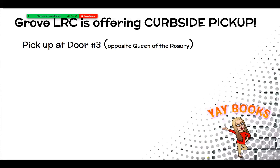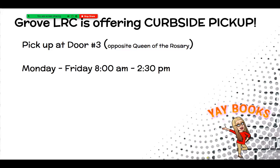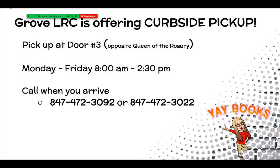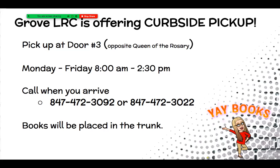When a student puts a book on hold and it becomes available, the student receives an email letting them know. At that time, you or another responsible driver from home would come to Grove Junior High to door number three, which is the door kitty corner from Queen of the Rosary Church, anytime Monday through Friday between 8 and 2:30. You would call when you arrive — students have been given that number, and I've also posted it here. There are two different lines, so if you don't get an answer, always try the other one. The books will be delivered outside to you without you having to get out of your car, either in the trunk or the backseat, and students can keep those books for up to four weeks. We're super excited to offer this option for students to have books to read at all times.